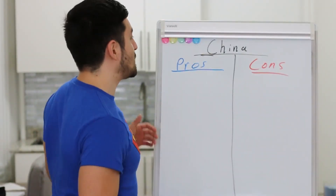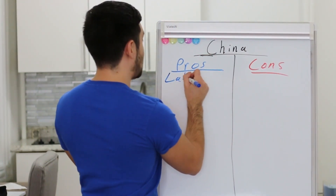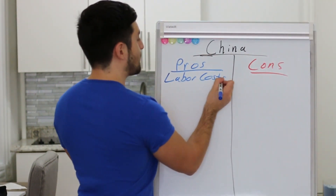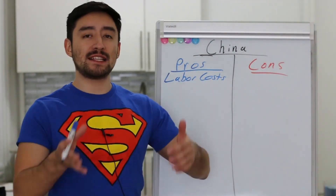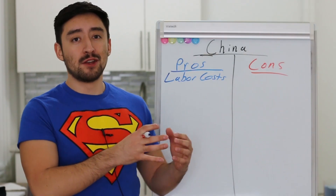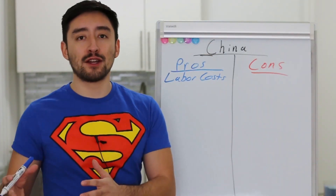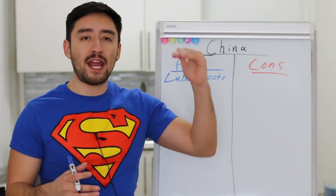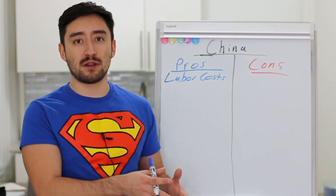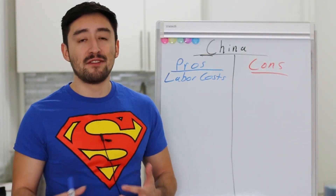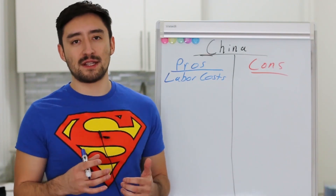The first pro or advantage of getting your product manufactured in China comes down to labor costs. Whenever you go to a different country, the price of labor is going to change. In the United States, in New York where I am, there's a very high cost of labor because there's also a high cost of living. You go to different areas in the United States, that wage, that salary, that cost of labor actually changes based on the various socioeconomic variables at play.